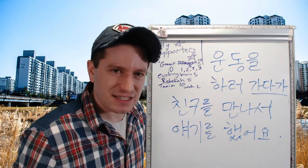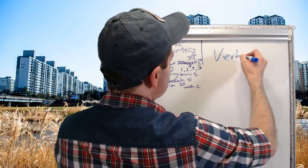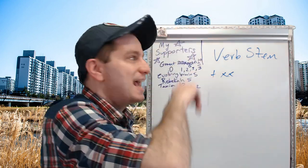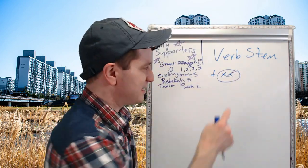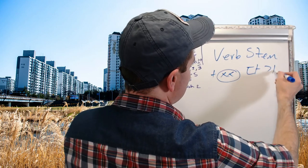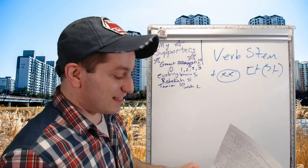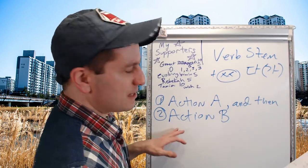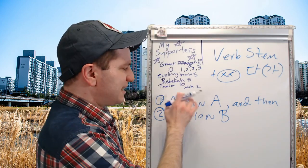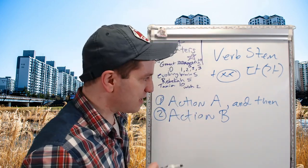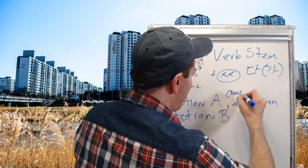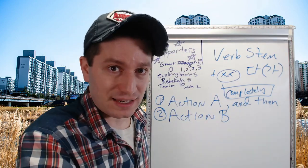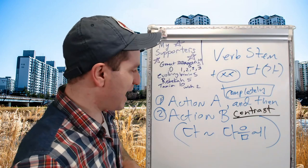The next form looks very similar but is conjugated differently. You take a verb stem and conjugate it into the past tense — the verb stem will always end with these endings — then you attach 다가, and as always, 가 is optional. This form shows that action A happens before action B; however, this doesn't have to be at a different location. Action A completely happens first — you can think of it as meaning 다 하고 나서 or 다 한 다음에.